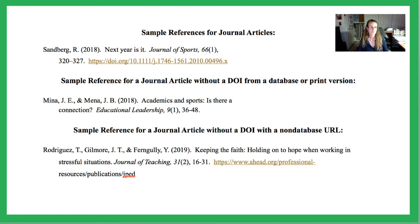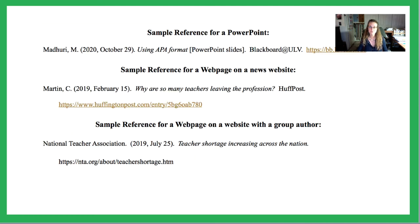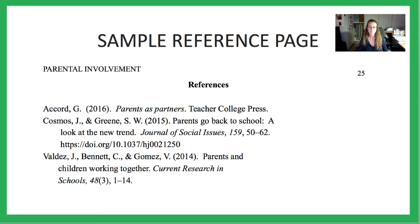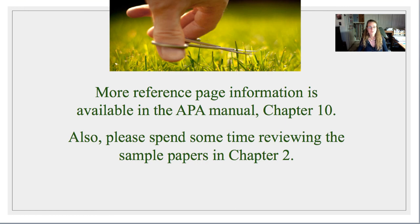There are other examples of different types of references: for PowerPoint, references on a web page, a YouTube video, and a page on a website. Here's what a sample reference page might look like — you've got a book title, a journal article, and another journal article. Checking the APA manual is always the way to go.